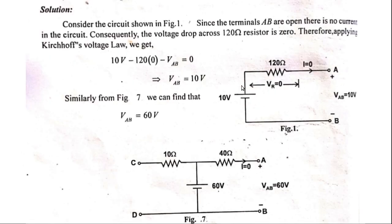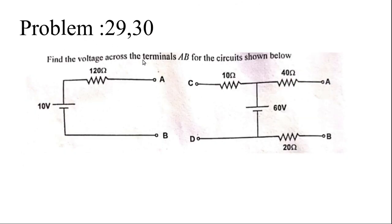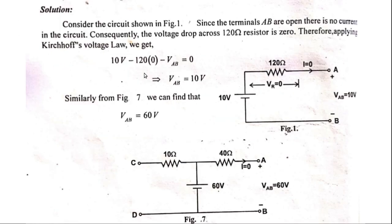Going directly to the problem: find the voltage across terminal Vab for the circuit shown. There are two problems here. In this circuit, there will not be any current flowing, so we are assuming I is equal to zero.